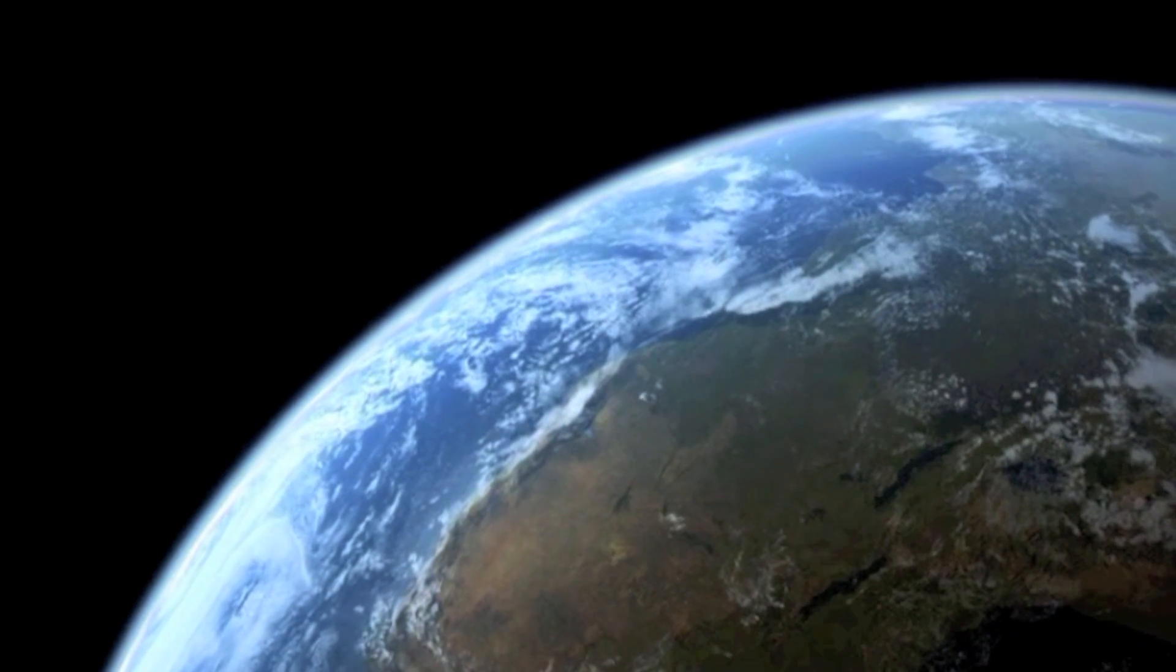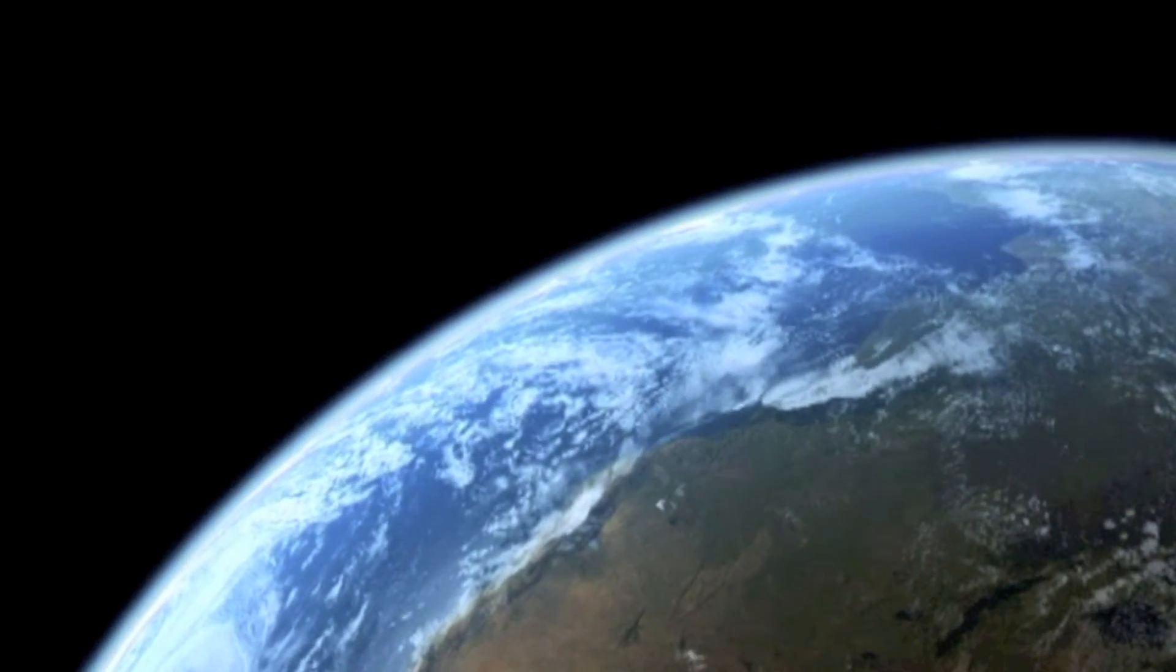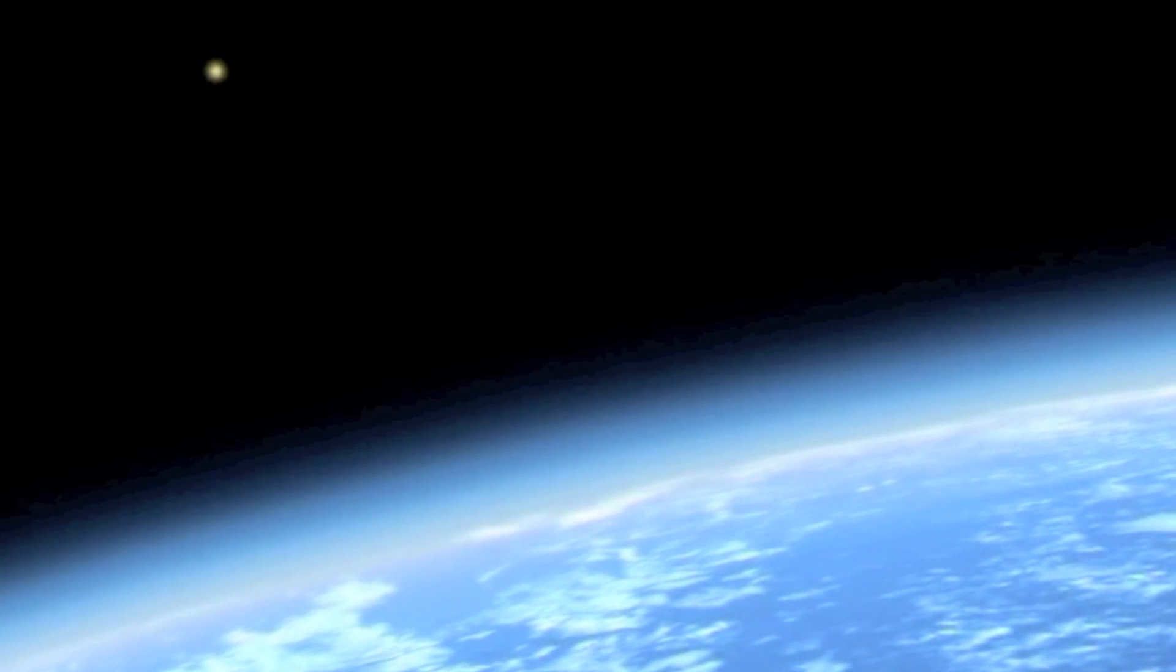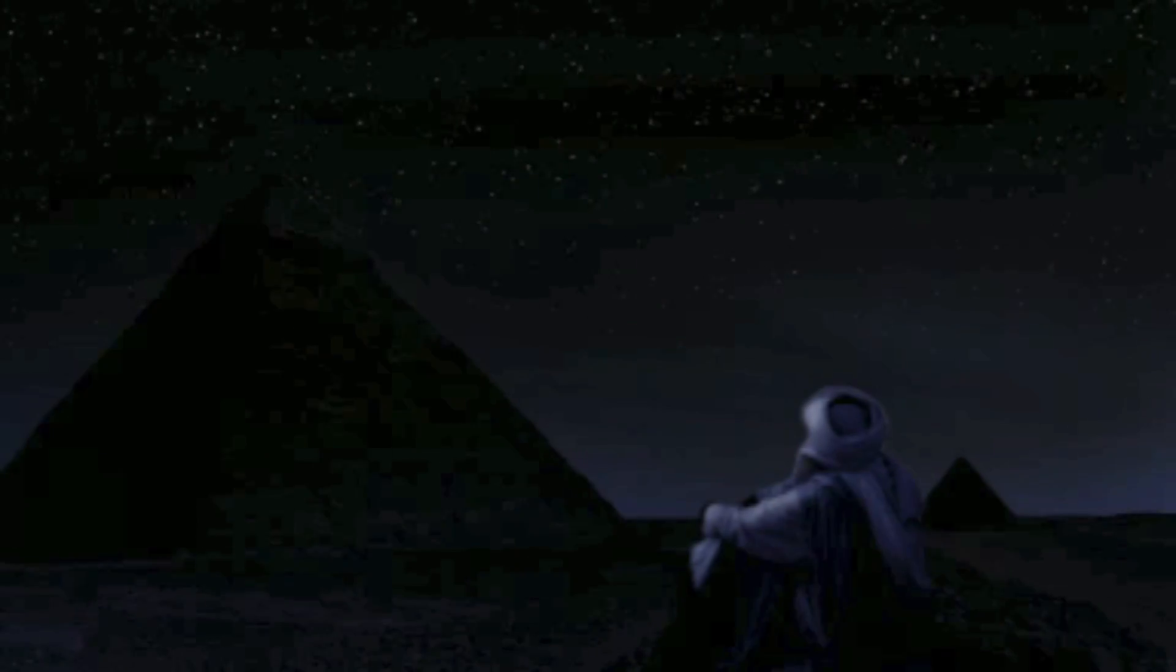While this movement of the sky gives the impression that the Earth is the center of the universe, diurnal motion is nothing more than an effect of Earth rotating on its axis. From our vantage point, as the Earth rotates, we get to see a full 360 degree view of the sky.